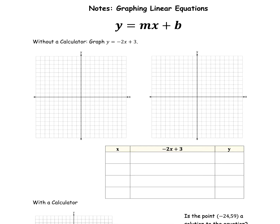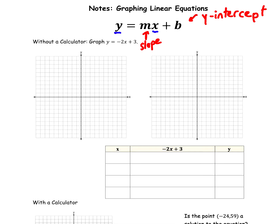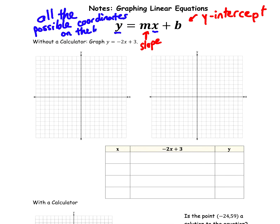So m is the slope. The b, remember, is the y-intercept. It's important to understand what x and y are. When we write our equation, we don't fill in for x and y — we leave them as x and y. We fill in for m and b. The x and the y represent all possible coordinates on the line.